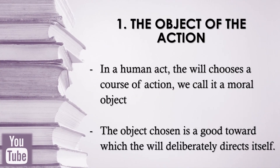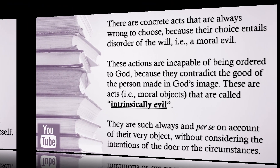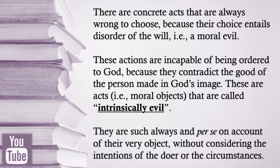The first determinant is the object of the action. In a human act, the will chooses a course of action — we call it a moral object. The object chosen is a good toward which the will deliberately directs itself. It is what the action by its own nature tends to, independently of the intention of the agent and the circumstances that may accompany it. There are concrete acts that are always wrong to choose because their choice entails a moral evil. These actions are incapable of being ordered to God because they contradict the good of the person made in God's image. These are called intrinsically evil acts — always and per se, on account of their very object, without considering the intentions of the doer or the circumstances.